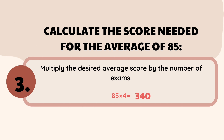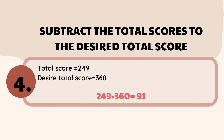For the fourth step, subtract the total score from the desired total score. We apply all the numbers solved previously — addition and multiplication — and now use subtraction. We subtract the total scores of Dana, which is 249, from the desired total score of 340. The answer is 91. So in order for Dana to get an average of 85, he needs to score at least 91 on his fourth examination.